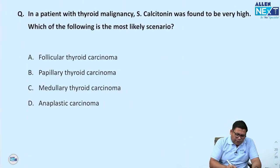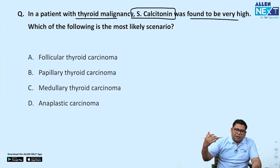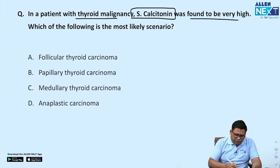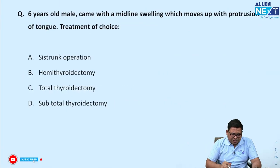Patient with thyroid malignancy and very high serum calcitonin — the answer is medullary thyroid cancer. This is a very easy question.